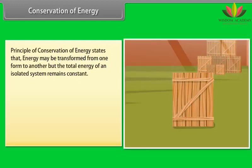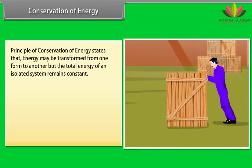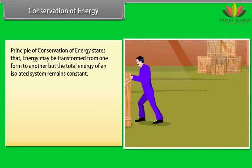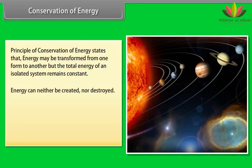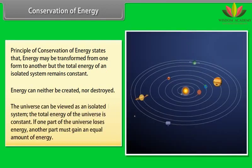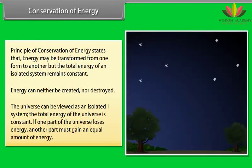Conservation of energy. Principle of conservation of energy states that energy may be transformed from one form to another, but the total energy of an isolated system remains constant. Energy can neither be created nor be destroyed. The universe can be viewed as an isolated system. The total energy of the universe is constant. If one part of the universe loses energy, another part must gain an equal amount of energy.